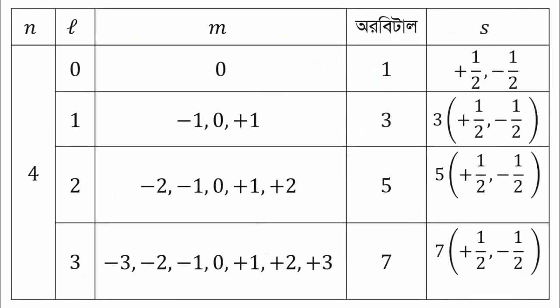Here we will look at the final summary. We will go through the principal quantum number, the azimuthal quantum number, the magnetic quantum number, and we will count the total electrons. Then we will see the spin quantum number. The orbital power of 1 means 1 electron plus half, 2 minus half is the spin quantum number.